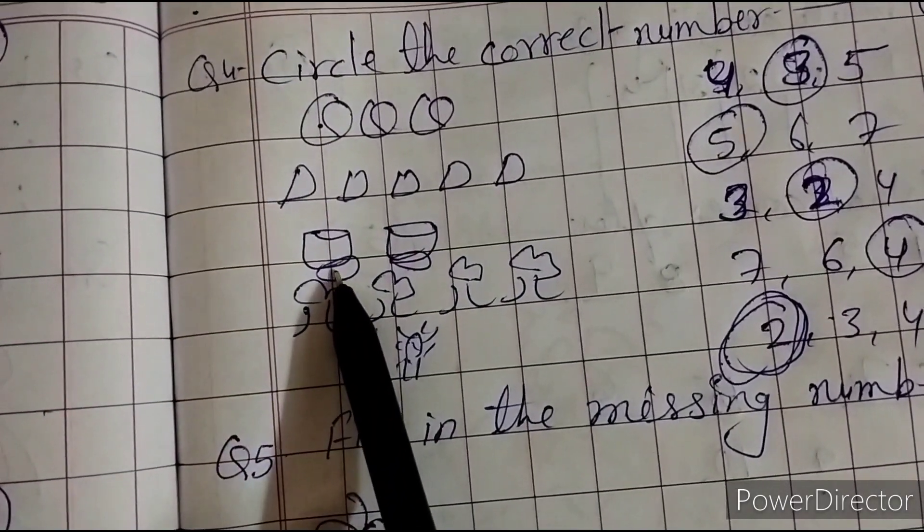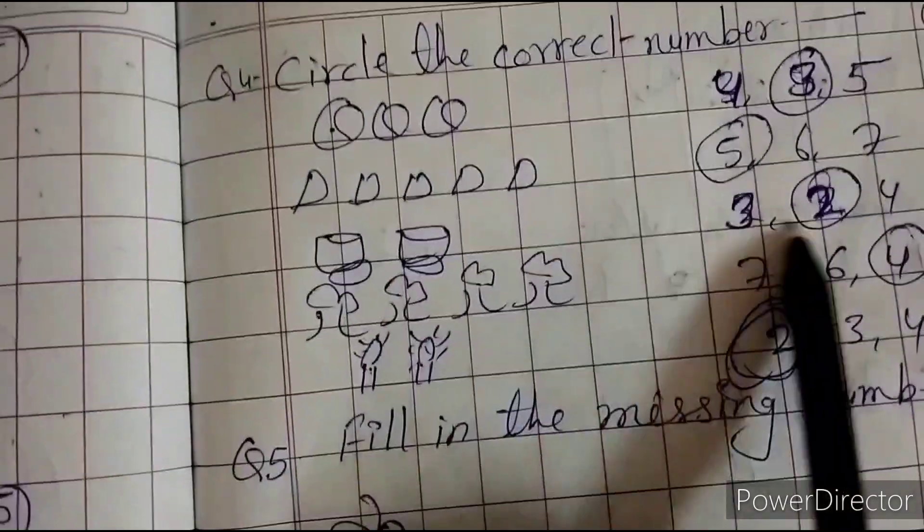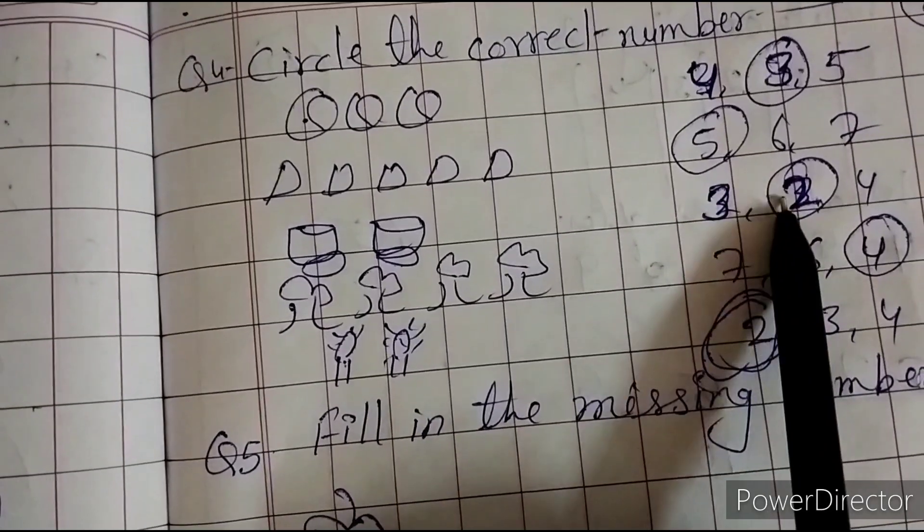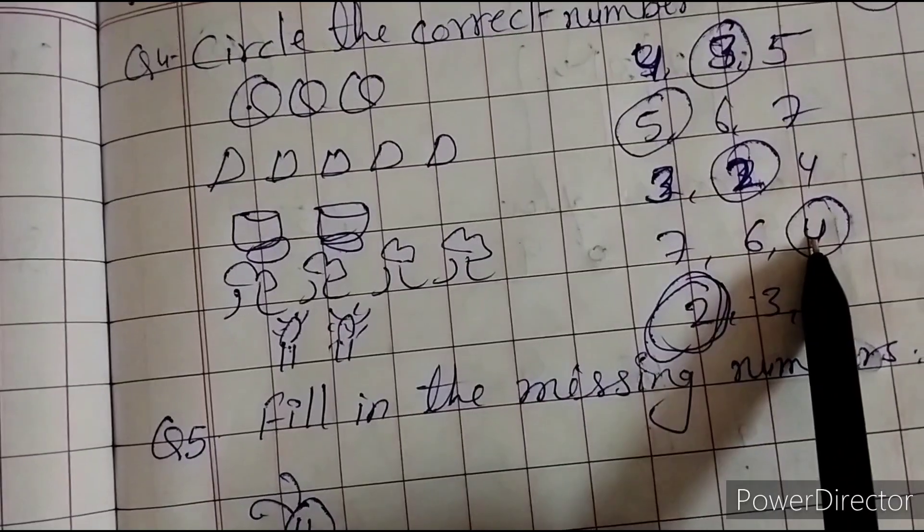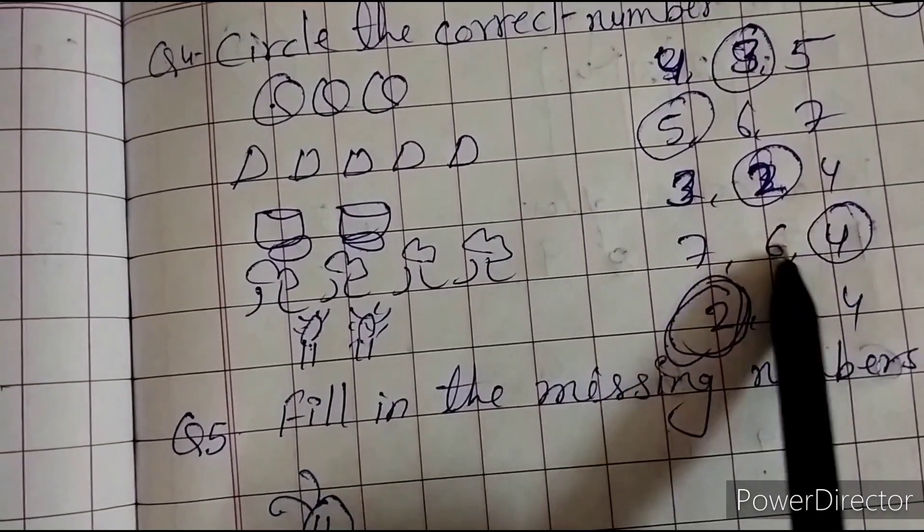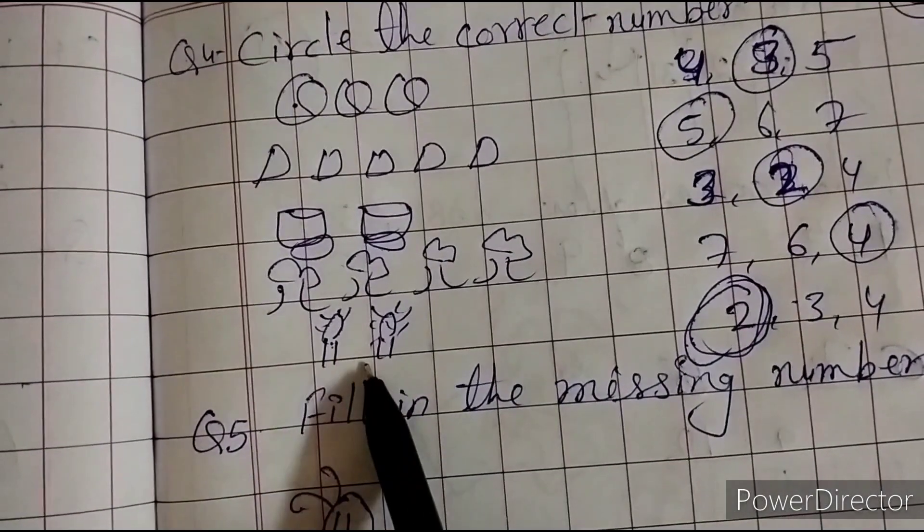Now, we count the triangle. So here is one, two. Two here. We count the triangle, and we count one, two, three, four. So four. So we count this, and we count this circle. One, two.